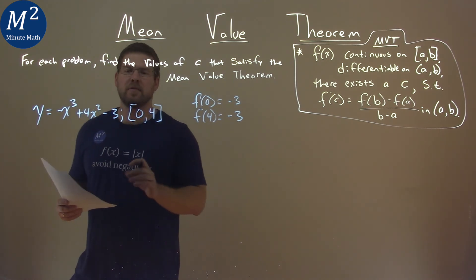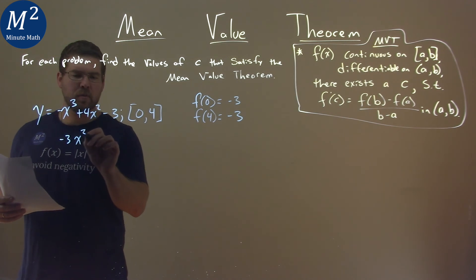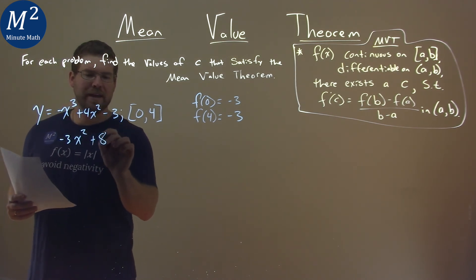Now, the Mean Value Theorem also tells us we need to take the derivative of our function. Using the power rule, we have f'(x) = -3x² + 8x.